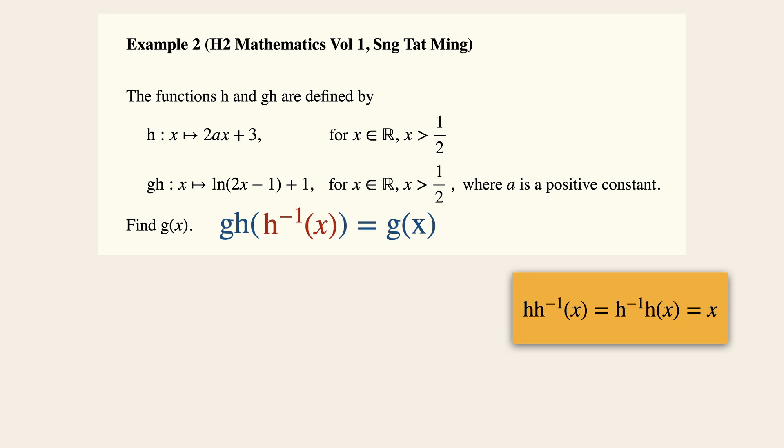So let's try to find the inverse of h first, by letting y equals to 2ax plus 3. We'll make x be the subject, so that will be equals to y minus 3 over 2a. Therefore, h inverse is equals to x minus 3 over 2a.